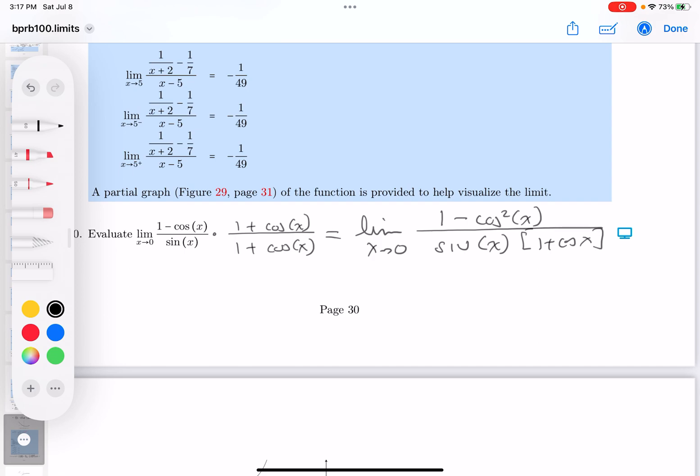Now granted, you could cancel it and go backwards, but I want to go forwards. And I notice immediately that the top is a Pythagorean identity now. And what's that going to be? It's going to be sine squared.